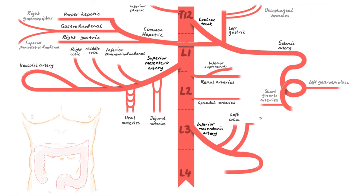So what comes after the descending colon, which is the left side of the large intestine? The sigmoid colon, thus the sigmoid branches we've got here.